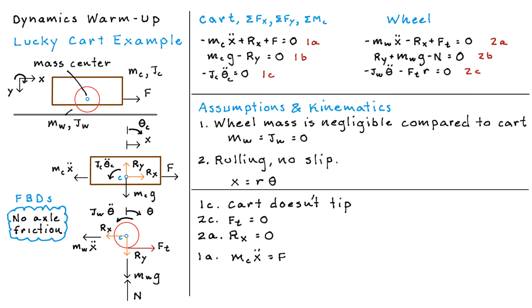Now moving over to equation 1A, back to the cart, since RX is zero, we just have MC X double dot is equal to F. And this is one of the first glimpses as to how this example of a cart and a wheel with some simplifying assumptions starts looking like a block that is sliding on a frictionless surface.